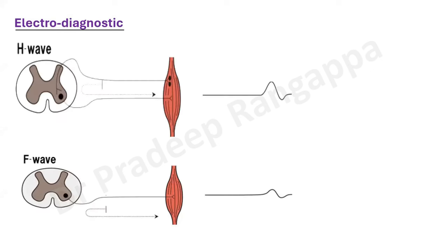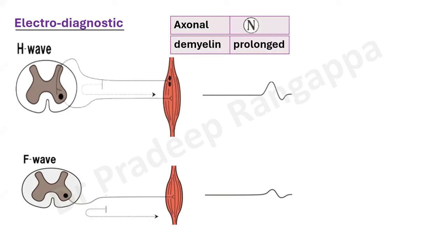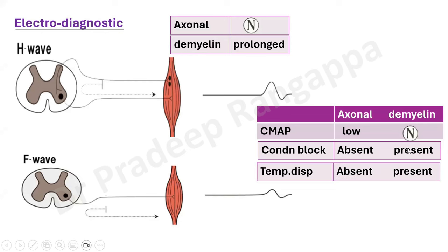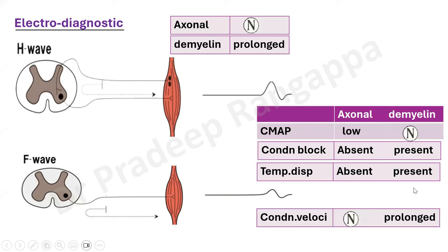For electrodiagnostic variants, there is the H-wave and F-wave — these are normal in axonal but prolonged in demyelination. Compound muscle action potential is low in axonal and normal in demyelination. Conduction block is absent in axonal and present in demyelination. Temporal dispersion is absent in axonal and present in demyelination. Conduction velocity is normal in axonal and prolonged in demyelination. So these are the typical electrodiagnostic features of GBS. For diagnosis: there is a clinical element, an investigative element (the albuminocytological dissociation), and the electrodiagnostic cues.